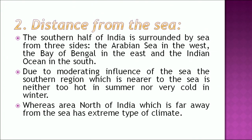Another factor is the distance from the sea. The southern half of India is surrounded by sea from three sides — the Arabian Sea in the west, the Bay of Bengal in the east, and the Indian Ocean in the south. Due to the moderating influence of the sea, the southern region is neither too hot in summer nor very cold in winter, whereas areas in north India which are far away from the sea have an extreme type of climate.